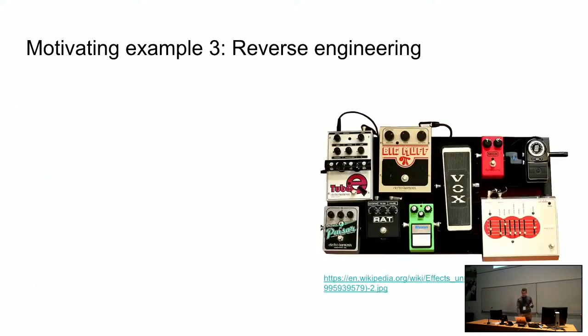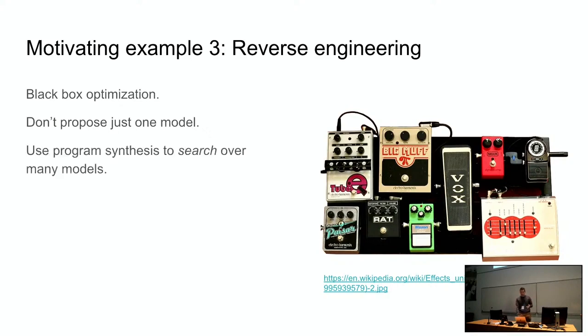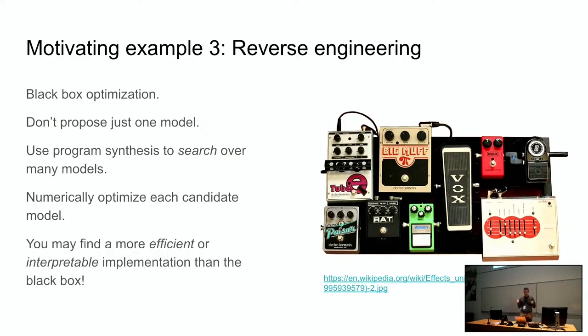And that leads me to another topic which would be reverse engineering of black box models. So in this case we might have a guitar pedal but the reason we call it black box is because we may not have a diagram of what is going inside the pedal and that's why we call it black box. Alternatively to black box optimization there's white box optimization so you might have a box and you would have a diagram of what's going inside but you don't necessarily know the numbers that are kind of the hard coded constants that go into that system and so you would use machine learning to figure out what those numbers are. But in the case of pedals it's just black box and the reason you might want to use program synthesis is that you could propose many models, many topologies of DSP circuits and now you use program synthesis to search over many models and you numerically optimize each candidate model. You may end up finding a more efficient or interpretable implementation than the black box so it can lead to happy accidents.